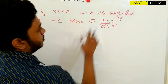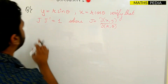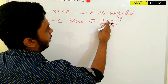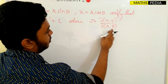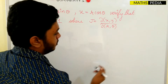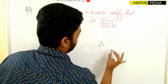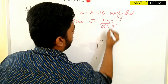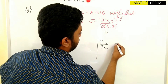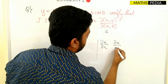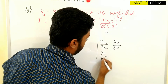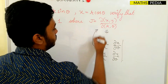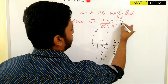We take the problem: y = r·sinθ, x = r·cosθ, and we need to verify that J·J' = 1, where J = ∂(x,y)/∂(r,θ). The formula for J is the determinant: ∂x/∂r, ∂x/∂θ in the first row, ∂y/∂r, ∂y/∂θ in the second row. We need to find J first and then J'.